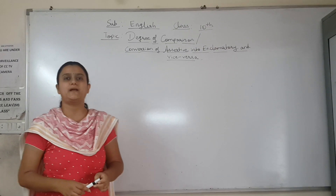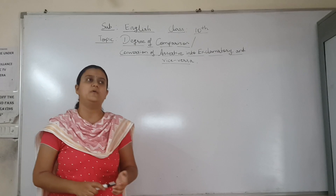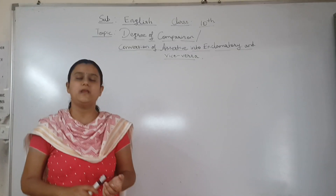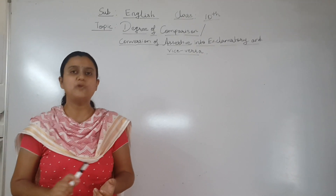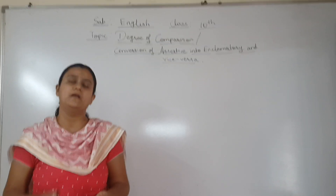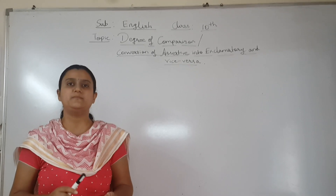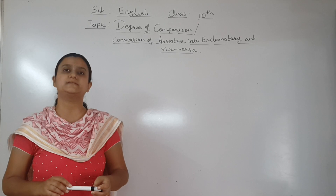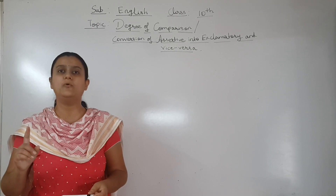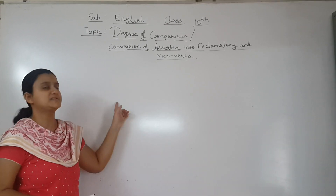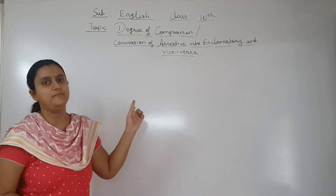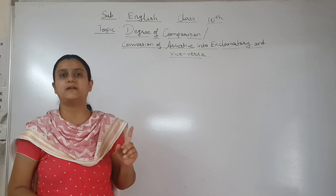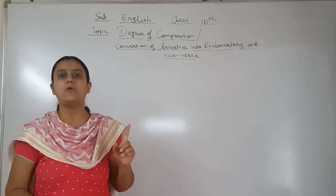Now you know that there are three types of degrees: positive, comparative, and superlative. Remember one thing — in positive degree there is no comparison. In comparative degree there is comparison between two things. And in superlative degree there is comparison between two and more things. Positive: no comparison. Comparative: comparison between two. Superlative: comparison between two and more.